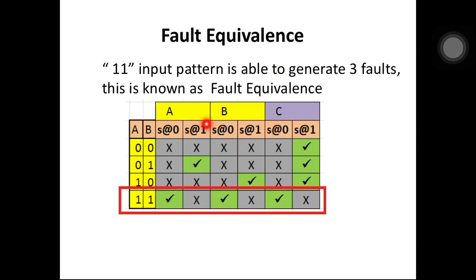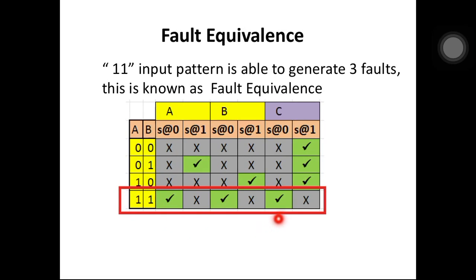Now we will see what is meant by fault equivalence. By using the 1-1 input pattern we can cover the stuck-at-0 fault at node A, stuck-at-0 fault at node B, and stuck-at-0 fault at node C. So by using one pattern we are able to cover 3 faults — this is known as fault equivalence.